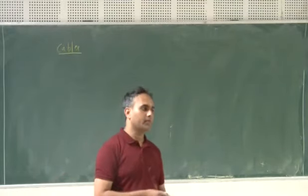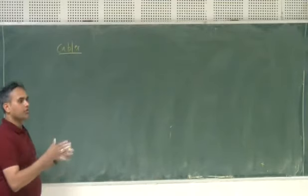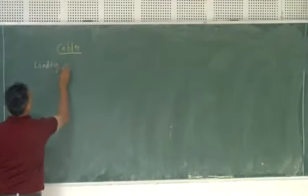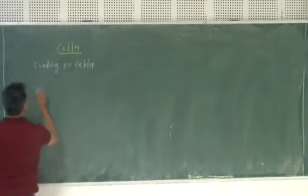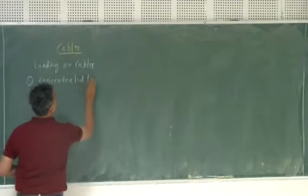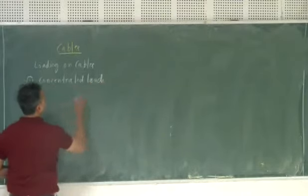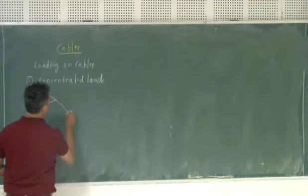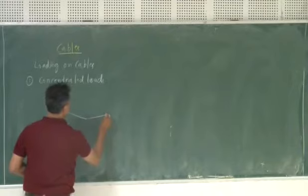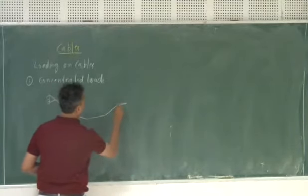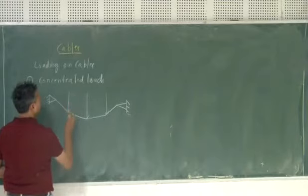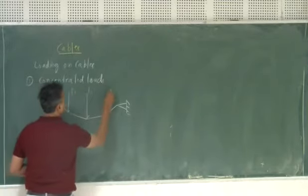Basically, most of the loads on these cables can be characterized into parts: first one is concentrated load and second one may be distributed either horizontally or along the line. Loading on cables - first one is concentrated load. In this case, you can see this is called P1, P2 and P3.